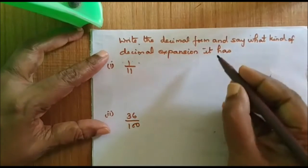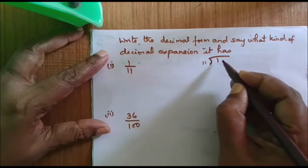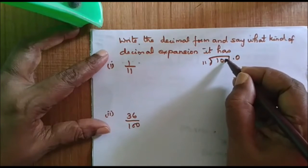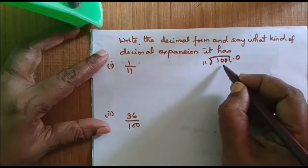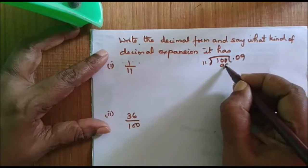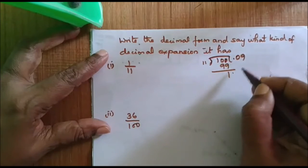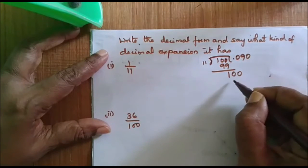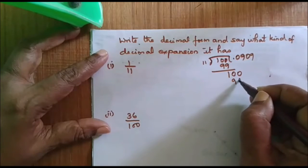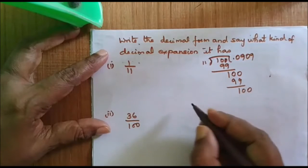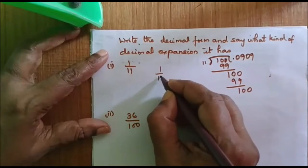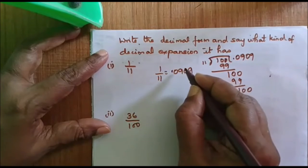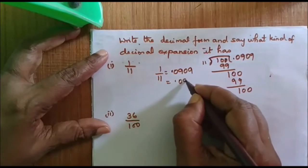Now let us do one more problem: 1 divided by 11. 11 will not go in 1, so we put a 0. Still not possible, so we put another 0. 11 will go in 110, 9 times — that is 99, remainder 10. Add another 0. It goes 9 times again, that is 99. So 1 by 11 is equal to 0.090909, or in other words, 0.09 bar.